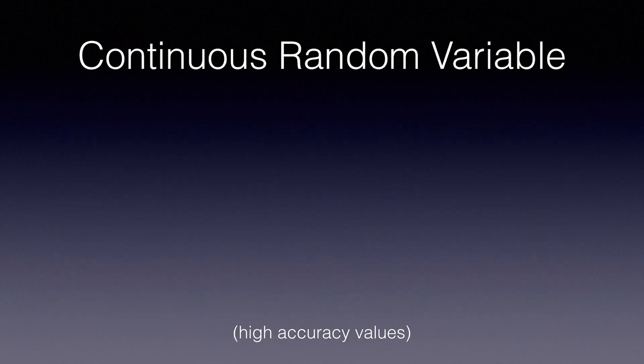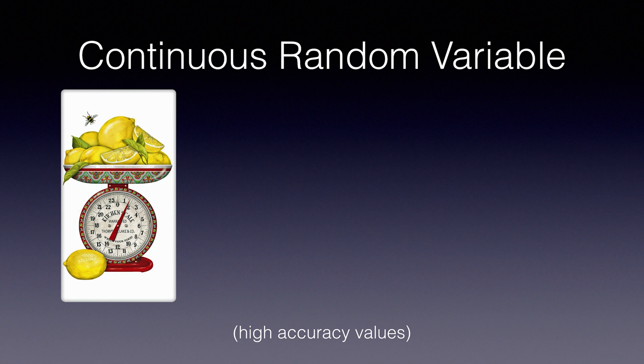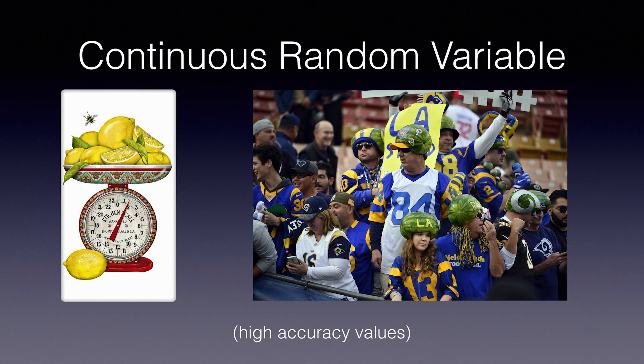On the other hand, continuous random variables are measurements that can be expressed with high accuracy, like the weight of lemons from a tree in grams, or the amount of tears shed by L.A. Rams fans in gallons after losing the Super Bowl.